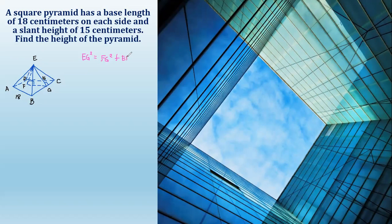So EG, the slant height, has a measurement of 15. So 15 squared equals FG. The base length is 18, so half of 18 is 9.